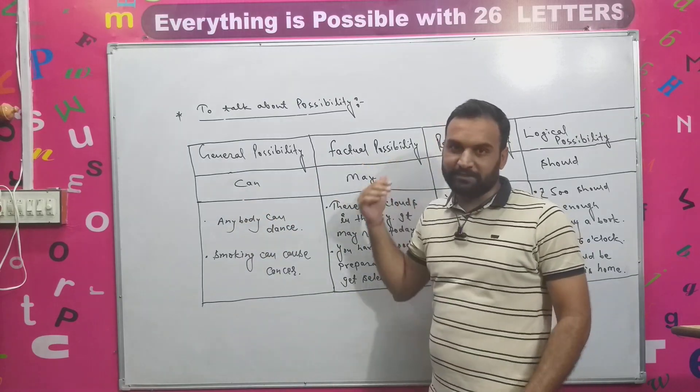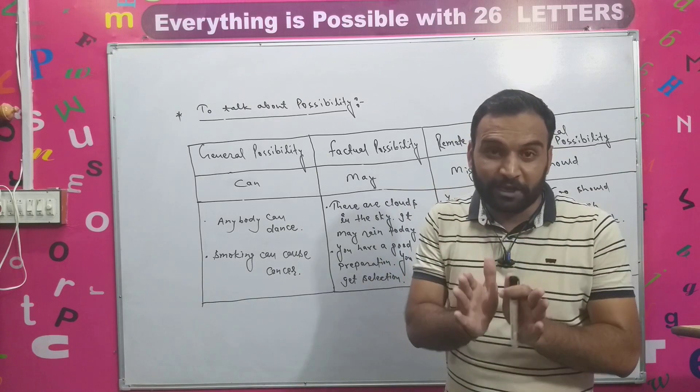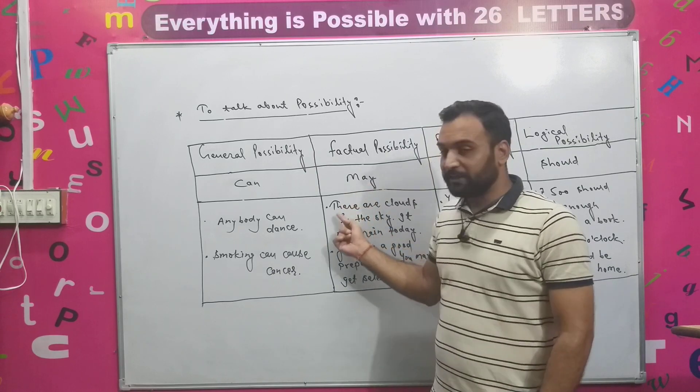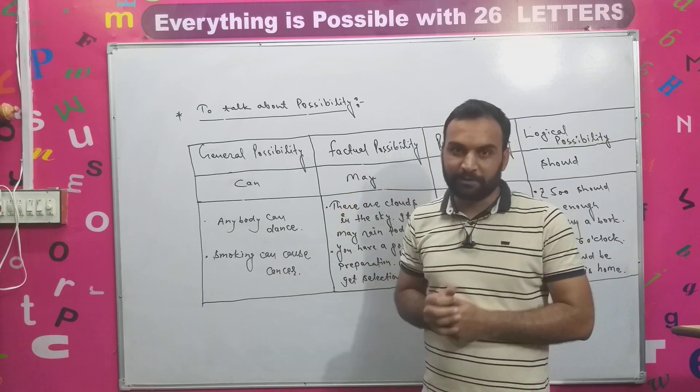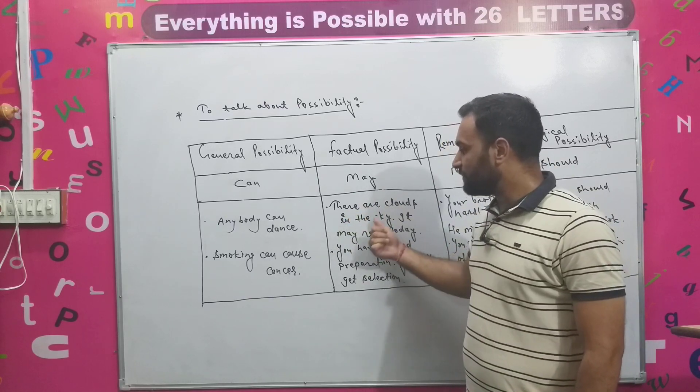The second is factual possibility. When you are talking about factual possibility, you have to take the help of 'may'. And we will talk about the actual possibility. So the examples are, there are clouds in the sky.